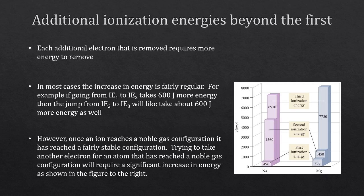I said 'most cases' for a reason. Once an ion reaches its noble gas configuration, it's reached a fairly stable state, and trying to take another electron will be significantly harder — causing a very large jump. For example, sodium becomes a noble gas after losing one electron. The jump from IE1 to IE2 is about 4,000 kJ/mol, whereas IE1 was only 496 and the jump from IE2 to IE3 was about 2,400. Magnesium becomes a noble gas after losing two electrons, so the jump from IE2 to IE3 is 6,300 — a huge increase.